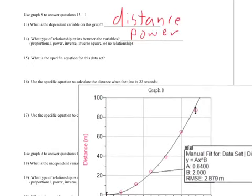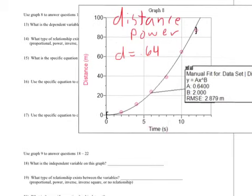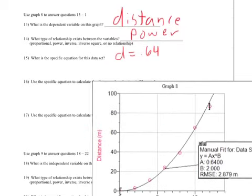What is the specific equation? Remember, to write the specific equation I've got to substitute out the Y, the A, the X, and in this case the B — I have to swap everything out, nothing can stay the same. So my Y variable is distance: D equals. Instead of A, I go here and see A is 0.64. It is times X, and X in this case is time, so T for time. I raise it to the power of B, and B is 2, so it's squared. The equation is: D equals 0.64 times T squared.